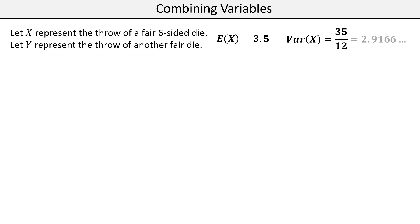We need the probability of each outcome, which is one sixth for each on a fair die. From that, we can find the expectation by multiplying the X values by their corresponding probabilities and summing all those products. Alternatively, by symmetry, since this is a uniform distribution, the middle value is the expectation — in the middle of three and four, we have 3.5.